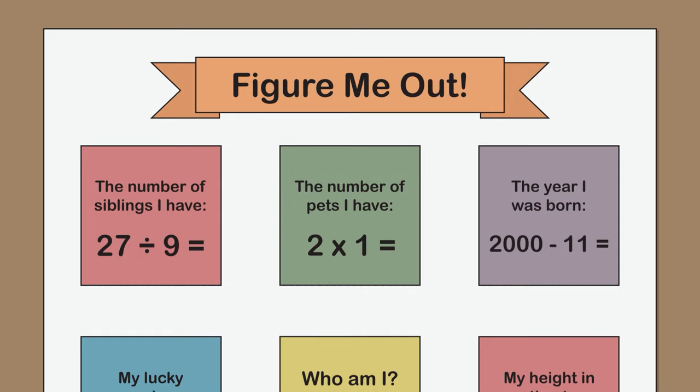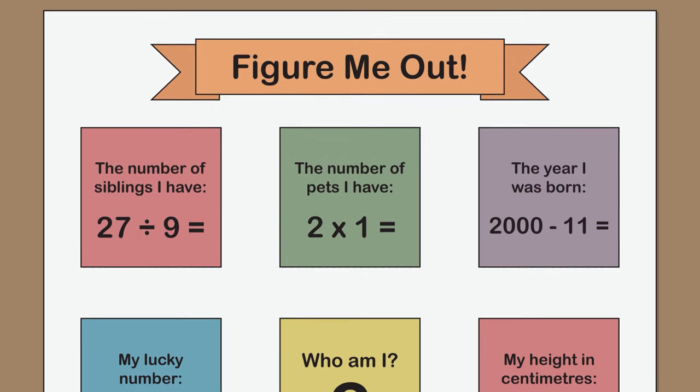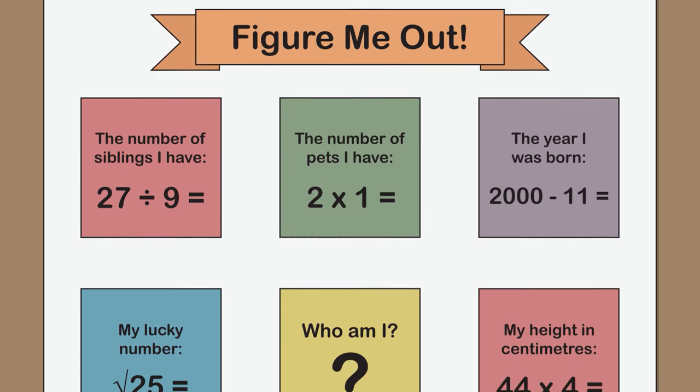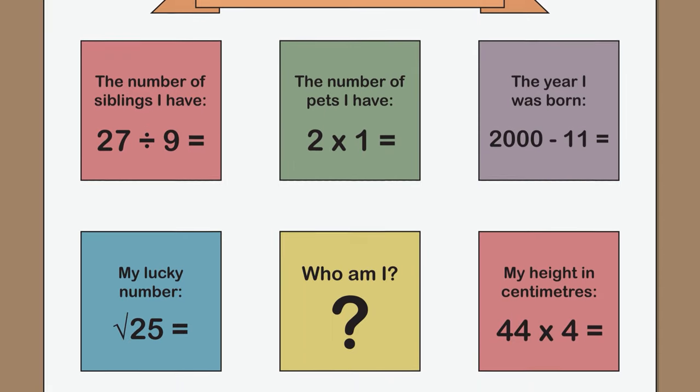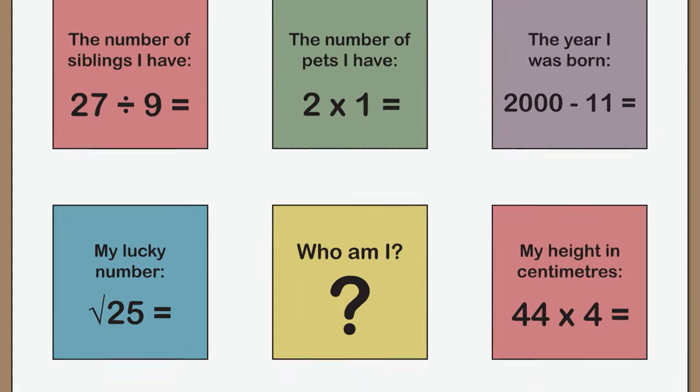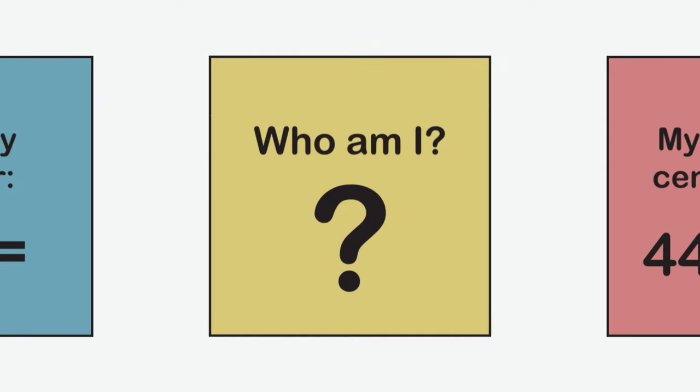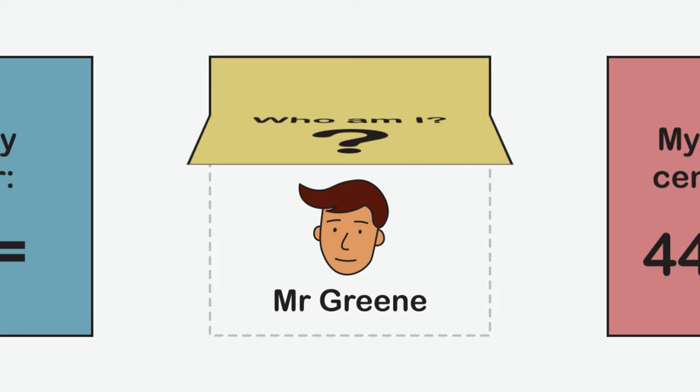The remaining sticky notes on the poster contain additional clues and number sentences to help the audience figure out the identity of the poster's creator. One of the sticky notes features the question who am I and a large question mark. Underneath this sticky note the identity of the incognito individual is finally revealed.